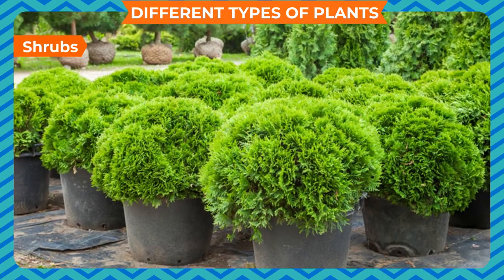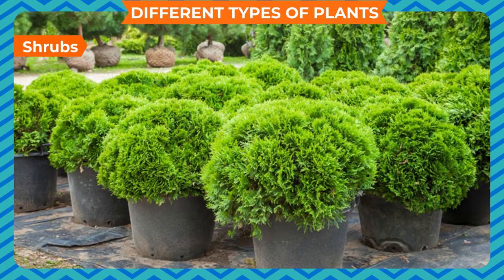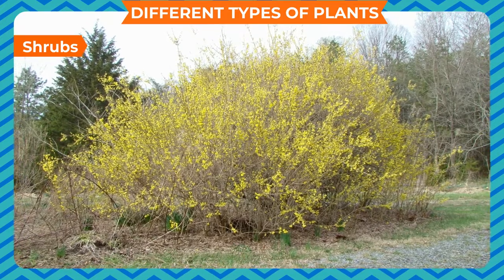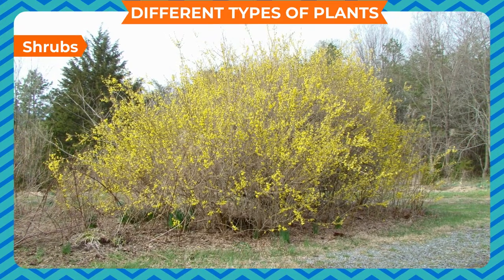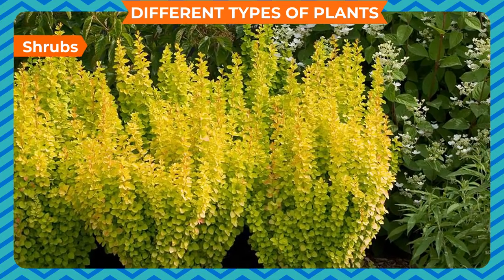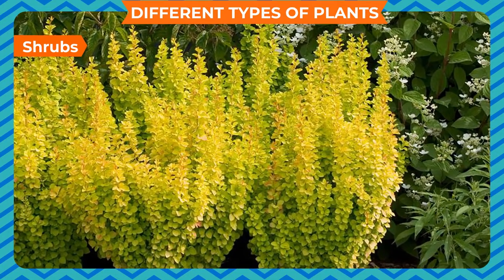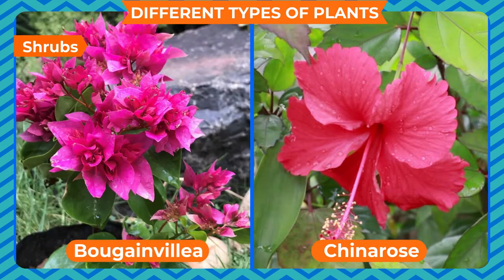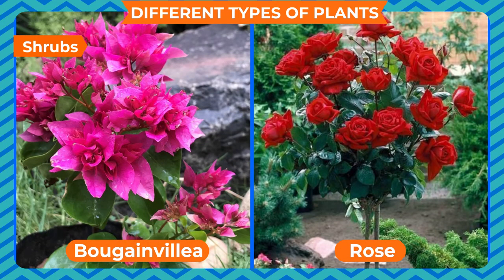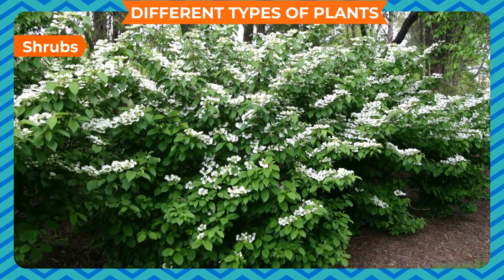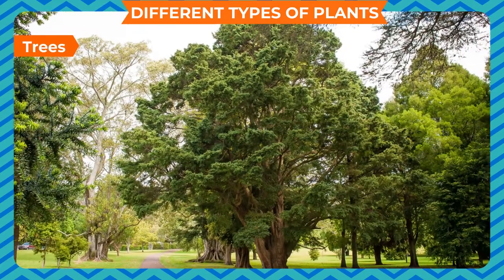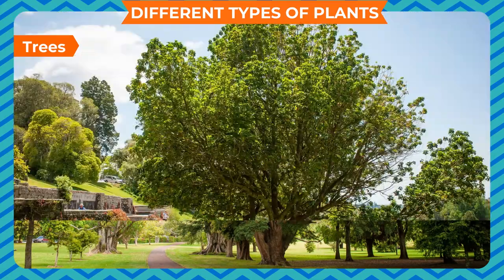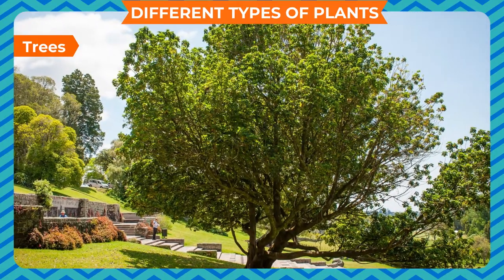Shrubs are medium-sized plants with hard and woody stems. Many branches grow from the base of the stem, just above the ground. The height of shrubs is generally one to three meters. Mehendi, China rose, and bougainvillea are examples of shrubs. Trees are plants with hard, thick, and woody stems. They are tall plants having a main trunk from which branches and leaves grow.